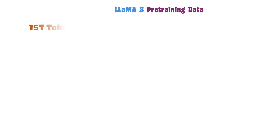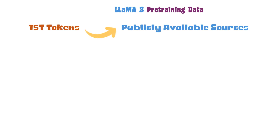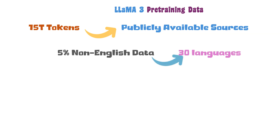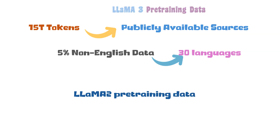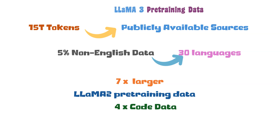Llama 3 pre-training data consists of 15 trillion tokens gathered from various publicly available resources. The pre-training data includes 5% non-English data covering 30 languages, which will enhance the multilingual performance of the model. Compared to Llama 2, Llama 3's pre-training data is seven times larger and includes four times more code data.